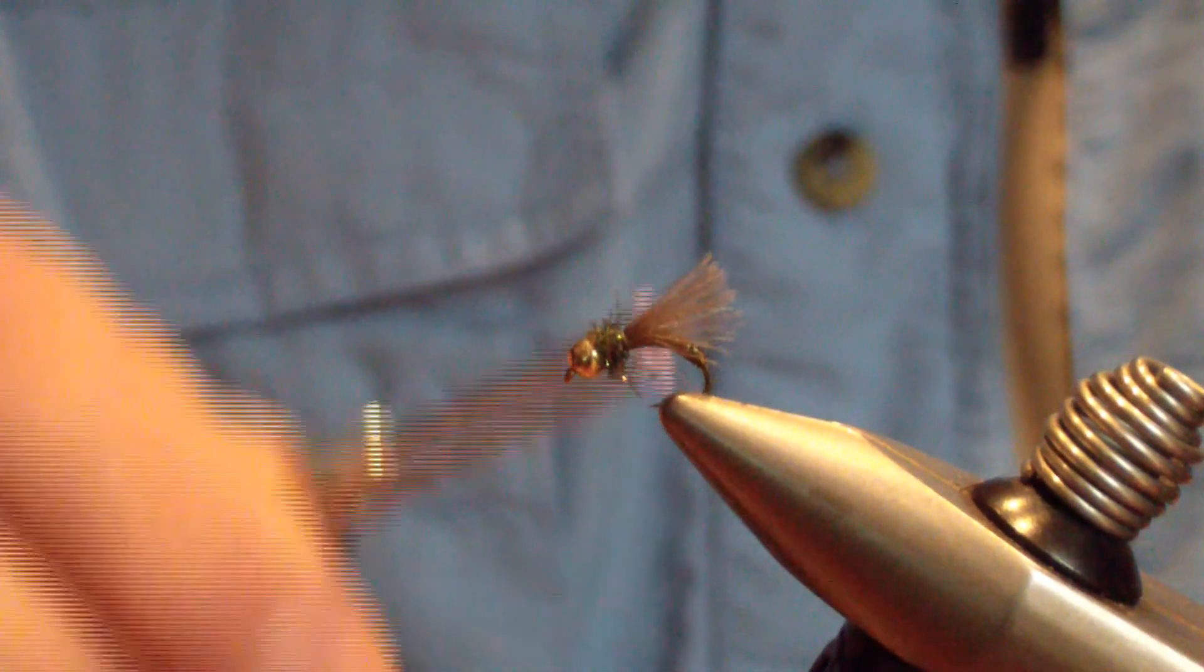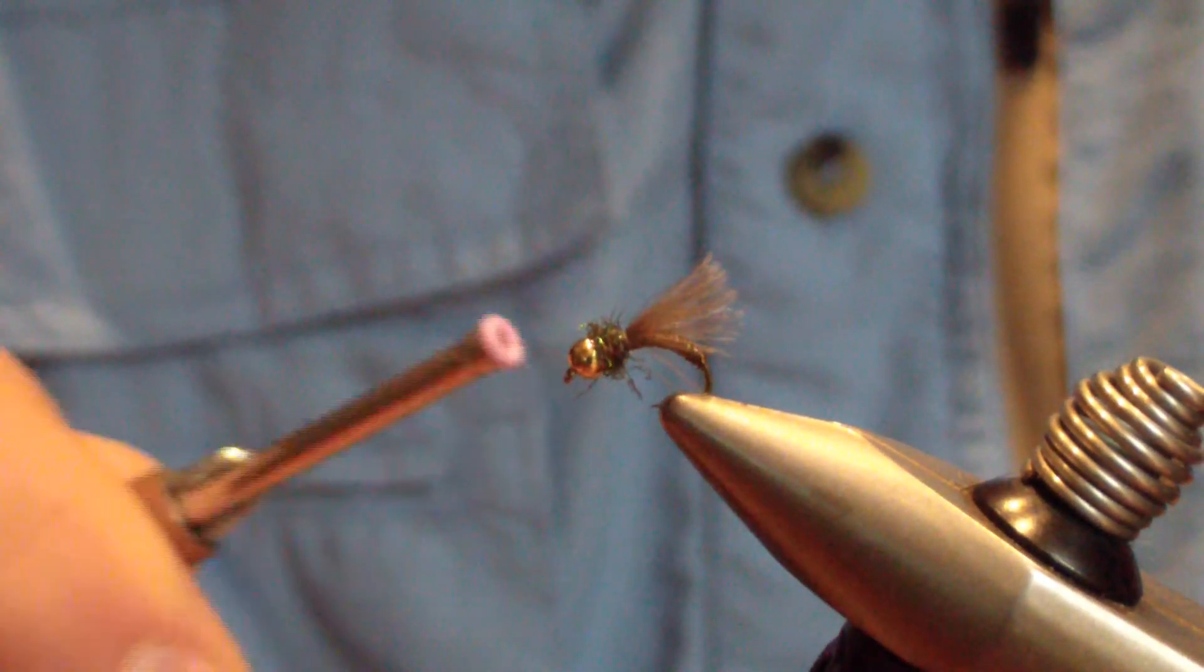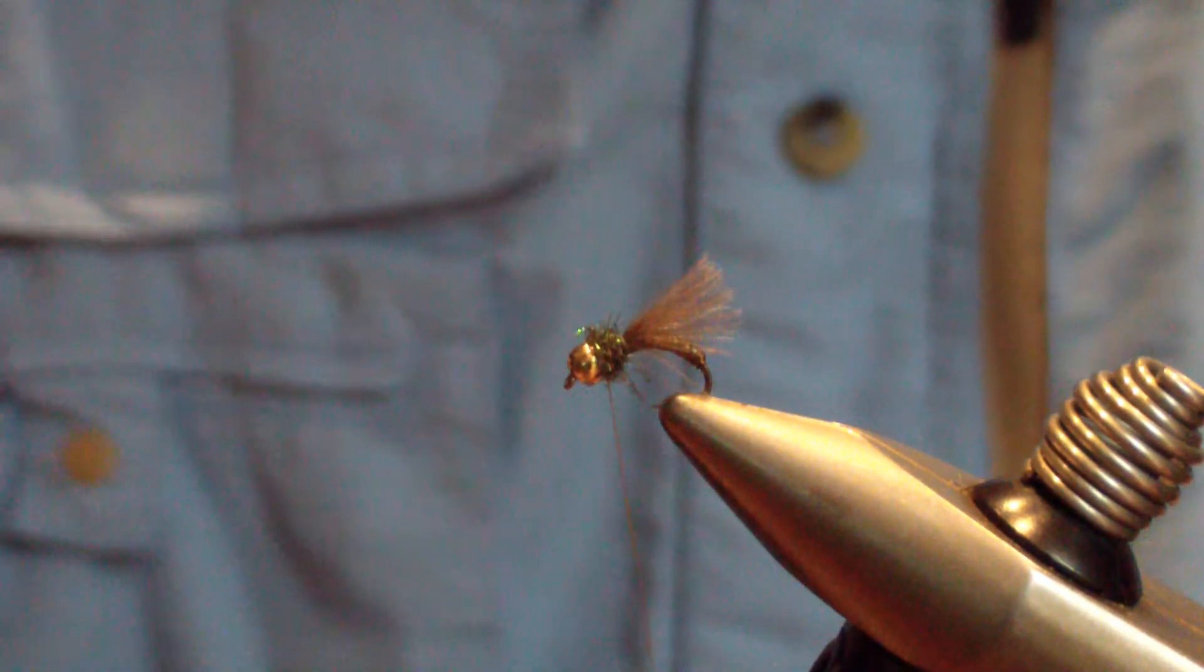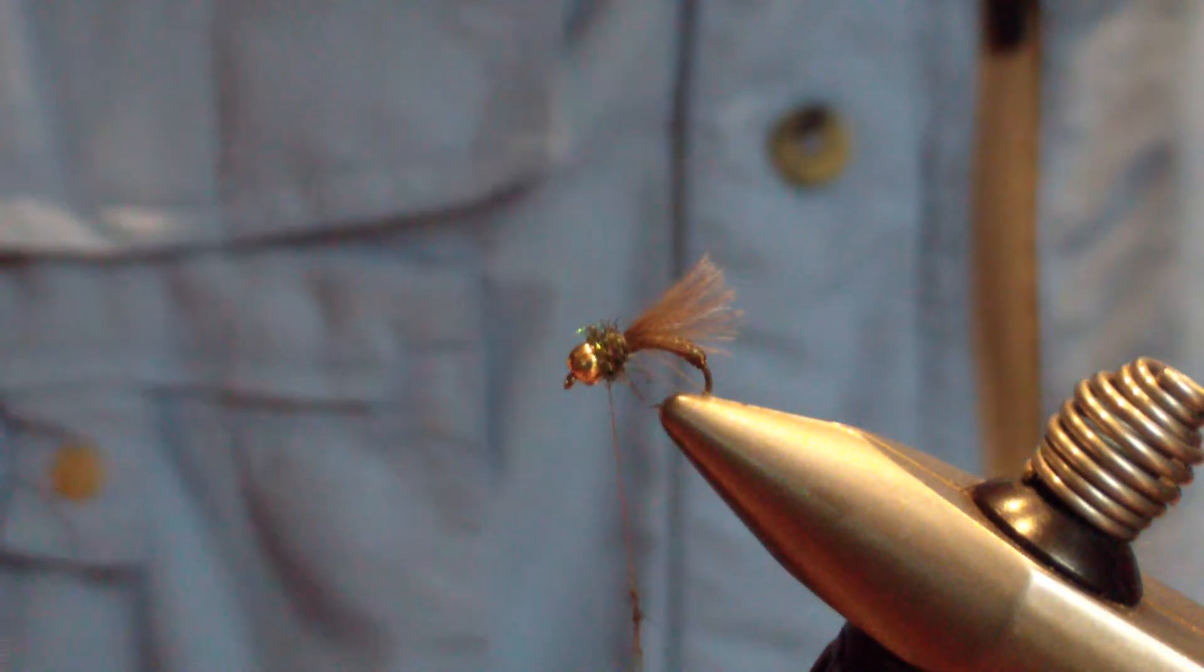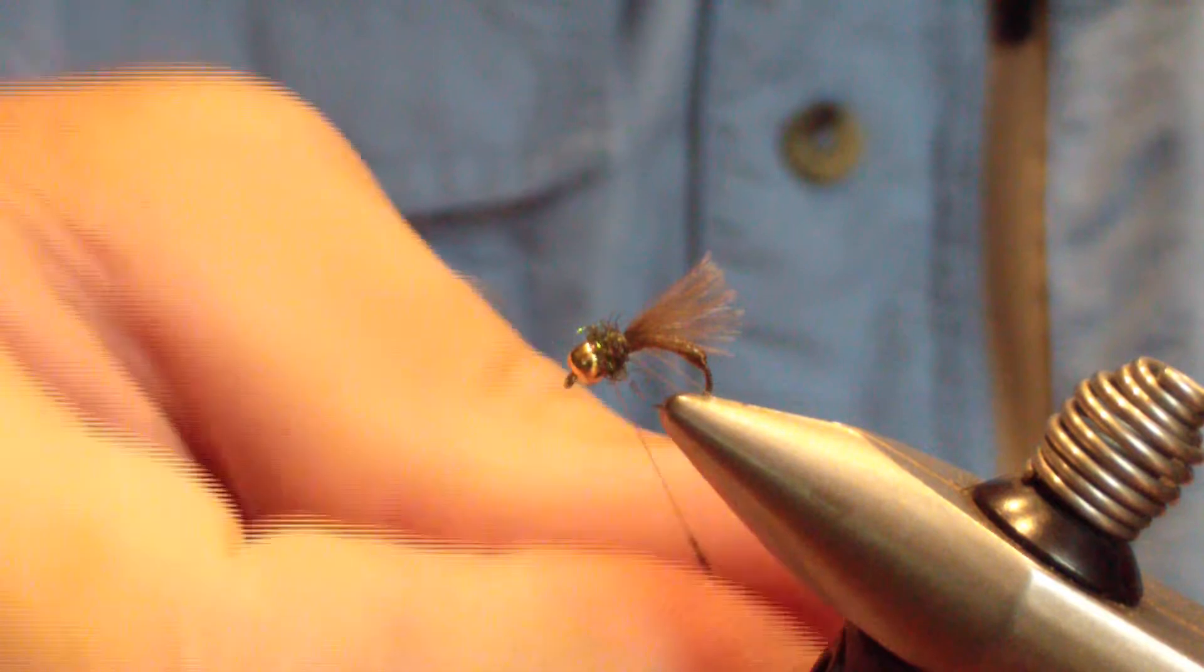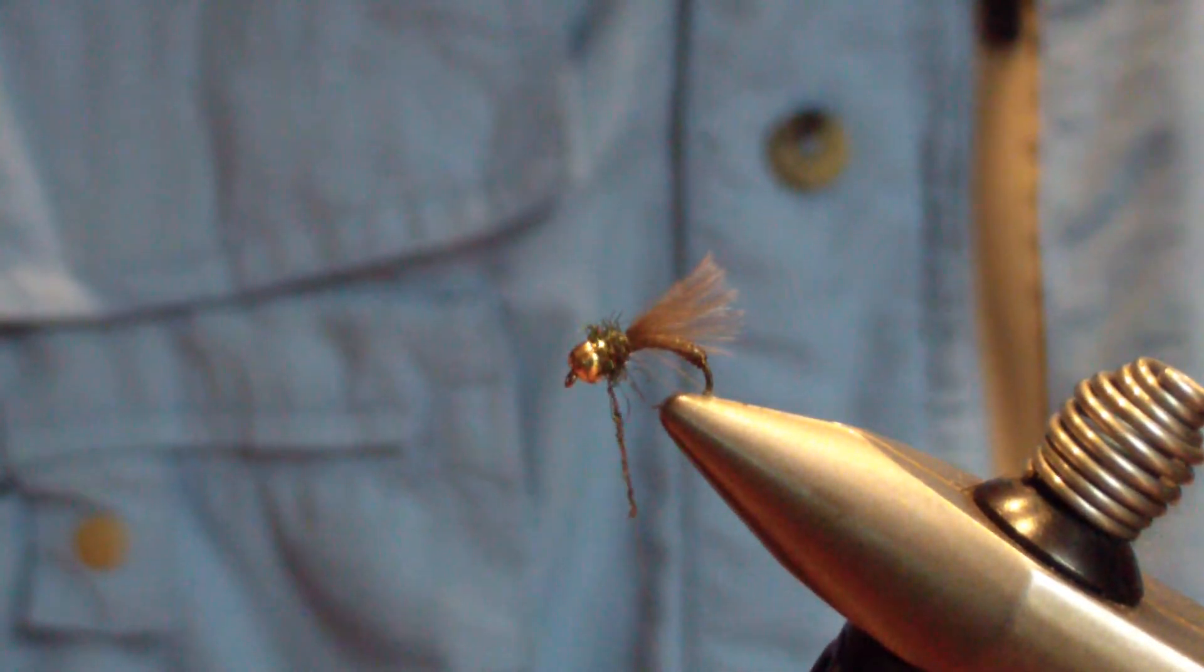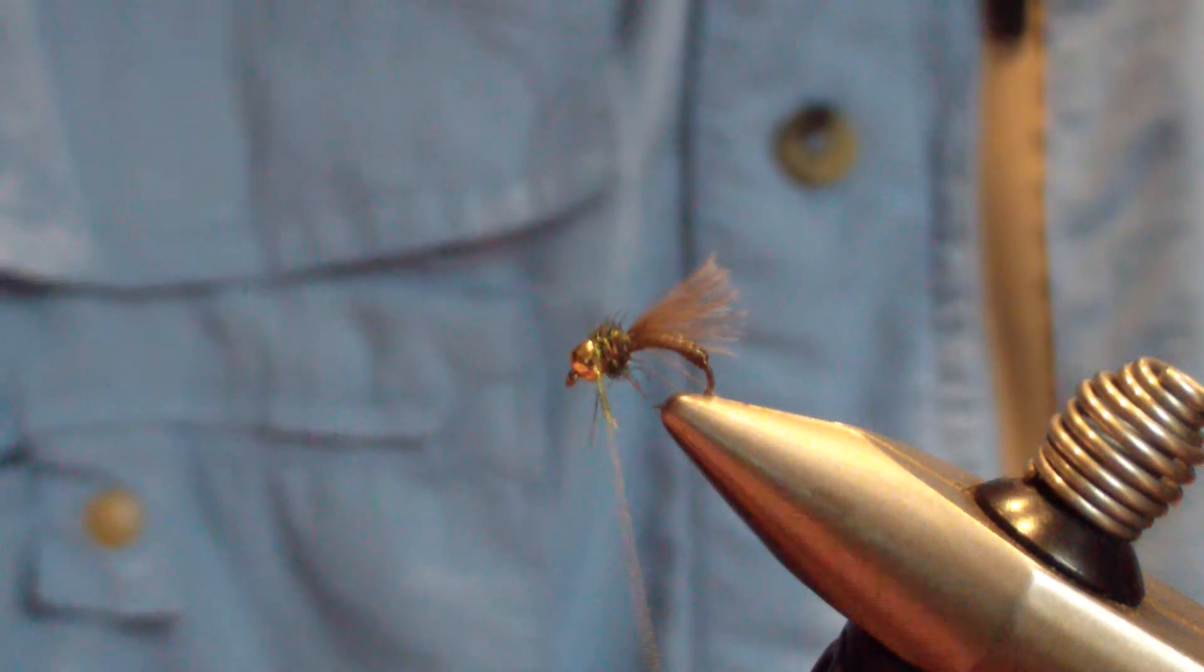Wrap that ice dub, keeping it a little bit tight against the bead. It will pick out and come back to blend with that CDC. It will just naturally pick out.